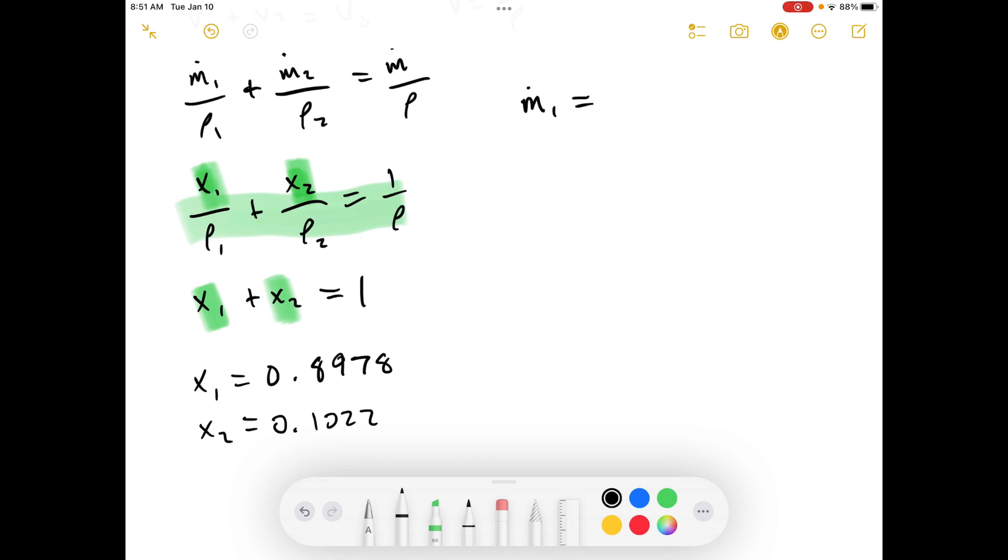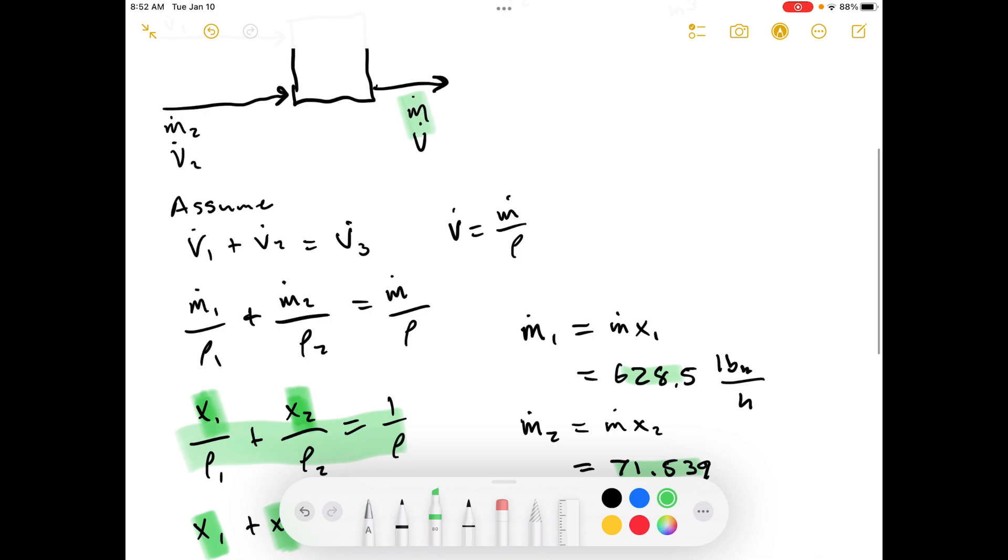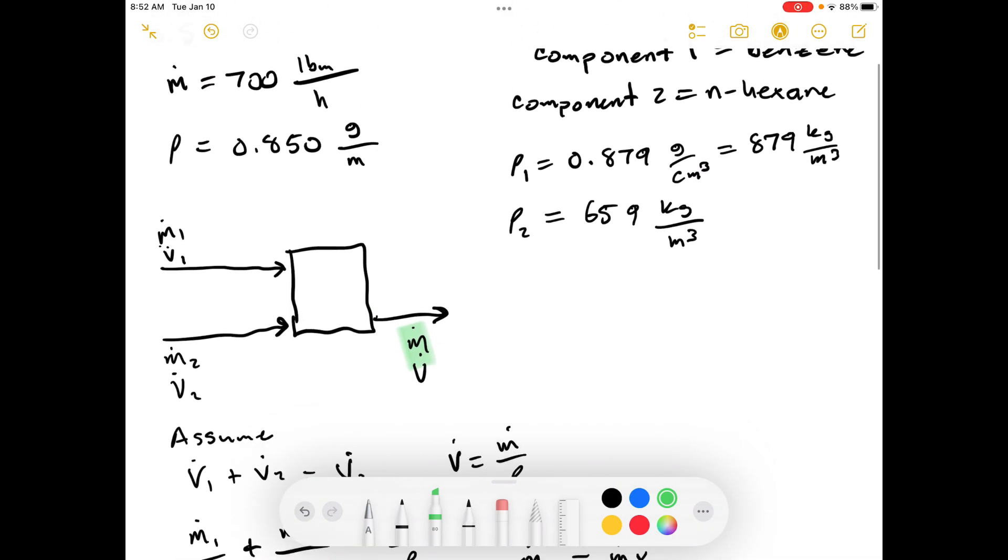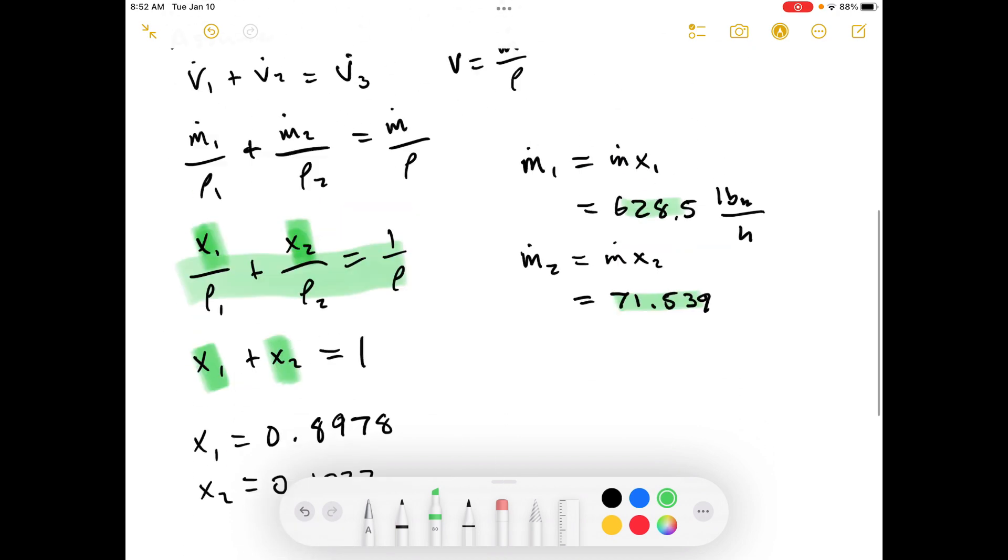Mass 1 equals the total mass flow rate times the mass fraction, which equals 628.5 pounds mass per hour. Mass 2 in a similar manner equals 71.539. If we add these together we should get 700. Sure enough, that is the case, so we did this correctly.